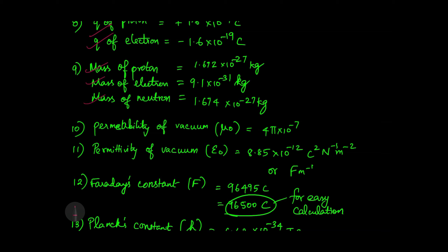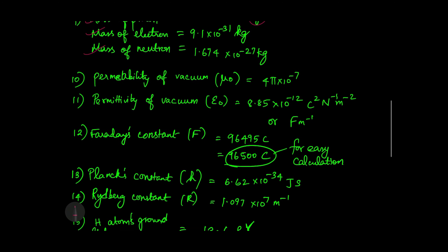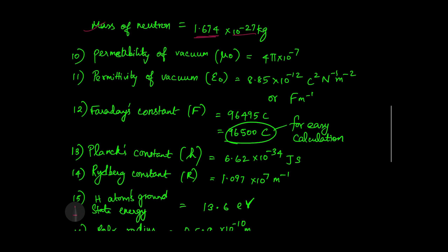The charge of proton and electron are the same except for the sign: 1.6 × 10 power minus 19 coulombs — positive for proton and negative for electron. Mass of electron is 9.1 × 10 power minus 31 kg.